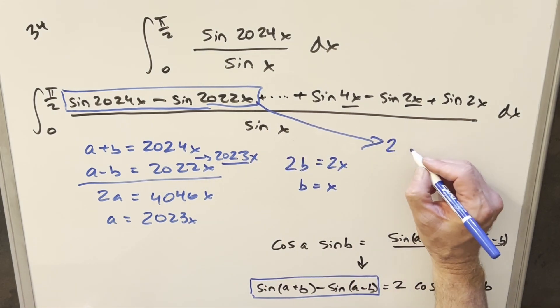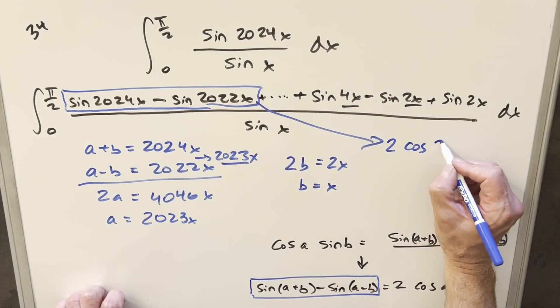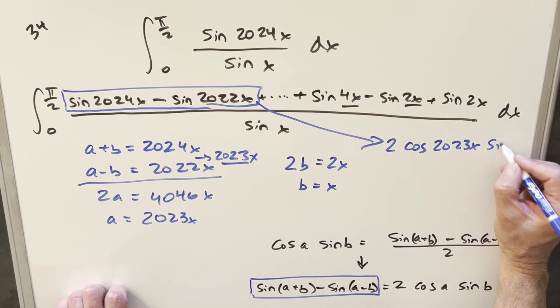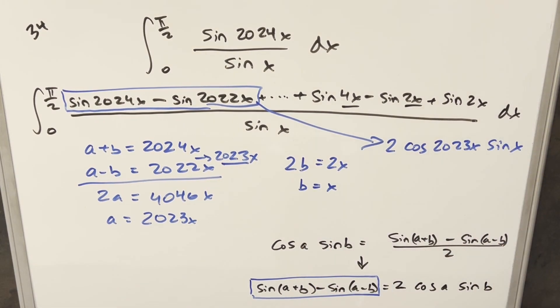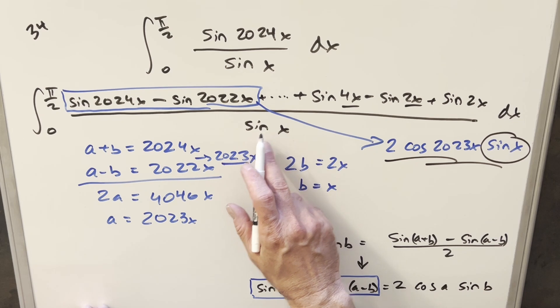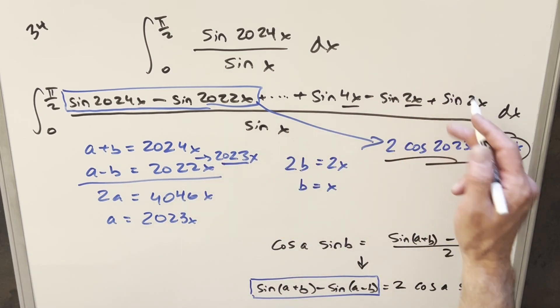So then using this formula, we can just rewrite this whole thing. It's going to be 2 cosine of a, which is 2023x, times sine of b, which is going to be sine of x. And the reason this here is going to help us simplify it is because we've got sine x here.